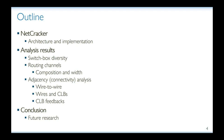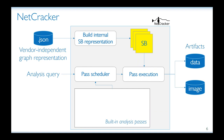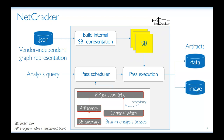Netcracker is a vendor-agnostic Python tool for the analysis of FPGA routing architectures, which we have made openly available. At its input, Netcracker expects a file in JSON format which describes one or more switch boxes of an FPGA routing fabric. The data to create such an input file is often readily available in FPGA design tools. Internally, Netcracker organizes its analysis in a number of passes, with each pass being as atomic as possible and able to produce and consume the results of other passes, allowing them to be organized in a dependency graph so that when an analysis request is specified, Netcracker can schedule the required set of passes and produce artifacts as data or images. Netcracker comes with a number of built-in passes, only some of which are highlighted here and will be discussed later.